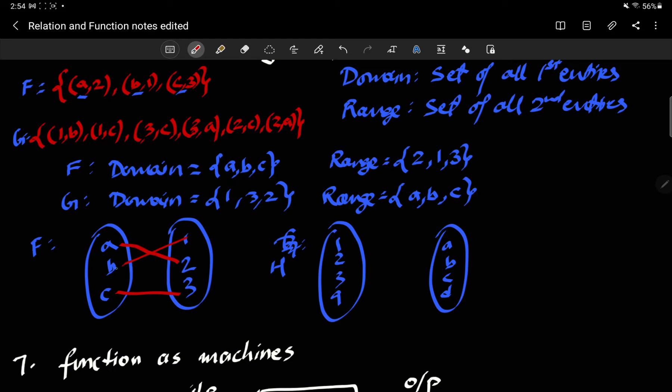So the first one, essentially the mappings were a to two, b to one, and c to three. And the domain is a, b, and c, which is all the things in the set x from where you have a line coming out. And the range is all the things in the set y where you have a line. Whereas if I take this example here, the domain is going to be just one and three, and the range is going to be just a and c. Why? Because two and four don't have any lines coming out of them, and similarly b and d don't have any lines coming into them.